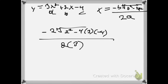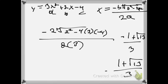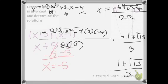I'm going to input that into the calculator. One solution comes out to be negative 1 plus the square root of 13 over 3. Another one is 1 plus the square root of 13 over 3.